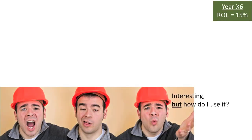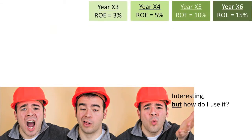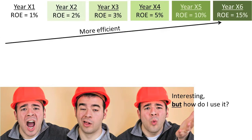Knowing the ROE for a company for a single year is not very useful to investors because there is nothing to compare it to. However, if investors can compare a company's current year ROE to the same company's ROE from prior years, they should be able to recognize whether the company is becoming more or less efficient. For example, if a company's ROE increased significantly each year for the previous five years, it would be an indication that management is becoming more efficient at using investor-provided resources to generate profits.